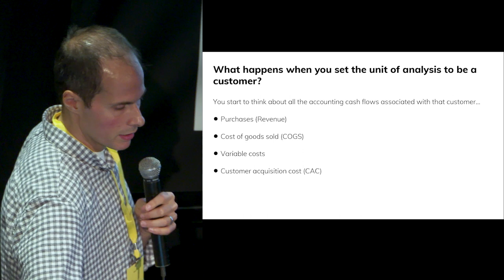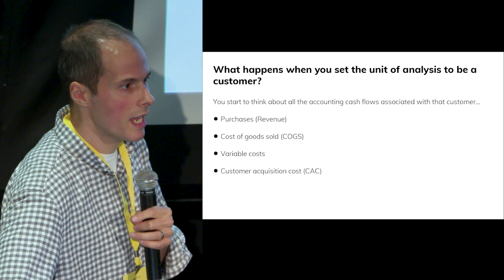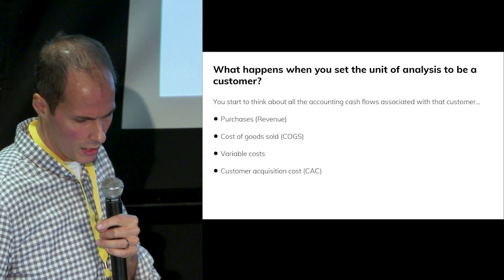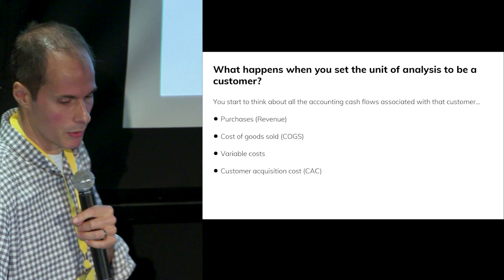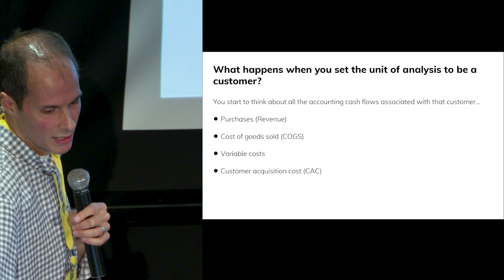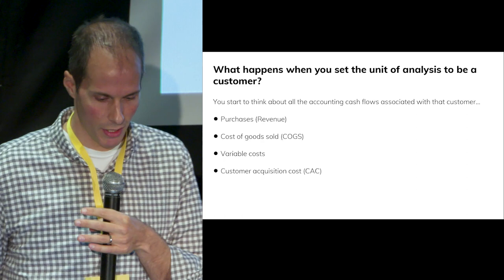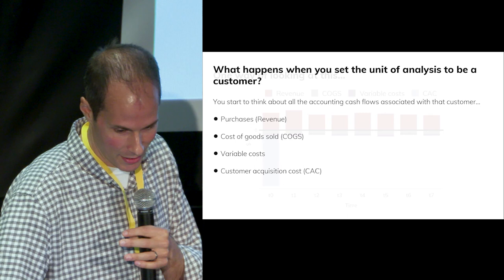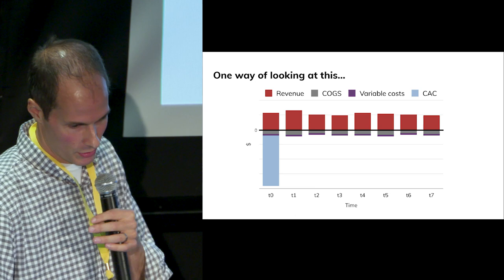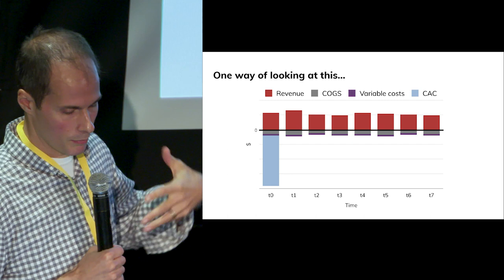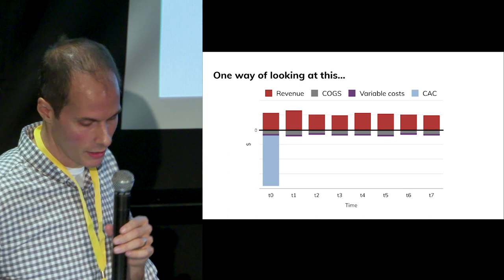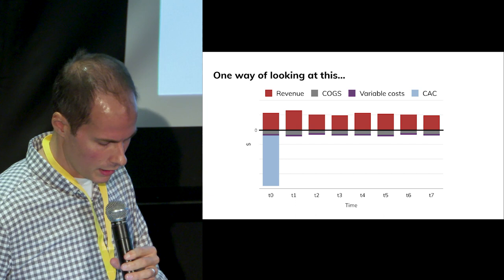You also think about all costs associated with serving that customer, called variable costs in accounting — everything that scales up as your customer count scales. And you're spending money upfront to find those customers, on marketing for example. That's called customer acquisition cost, or CAC: you take your marketing spend, divide by the number of customers acquired, and apportion that cost to each customer. In a bar chart, the y-axis is positive when money comes in and negative when it goes out.